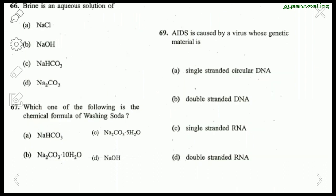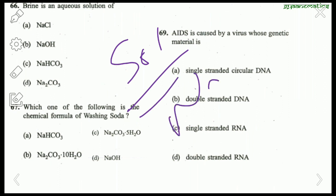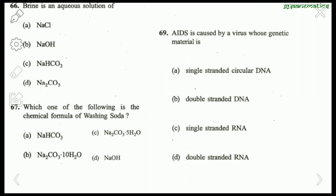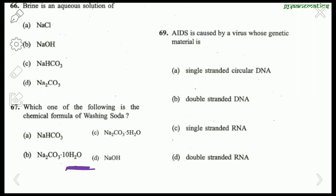Question 66: Brine is an aqueous solution of NaCl — very simple. Question 67: The chemical formula of washing soda. Sodium bicarbonate (NaHCO₃) is baking powder. Sodium carbonate is washing soda, but the water of crystallization present in washing soda is 10H₂O — not 5H₂O. So the right answer is Na₂CO₃·10H₂O, which is B.